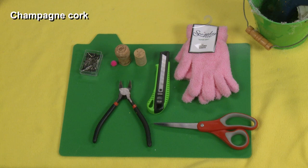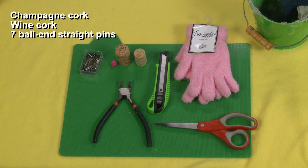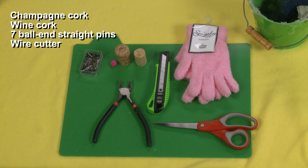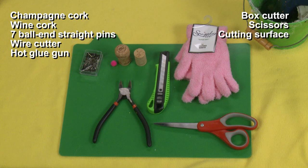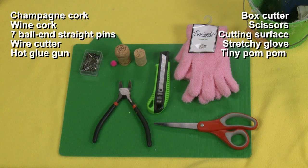For this project, you will need a champagne cork, a regular cork, seven ball and straight pins, wire cutter, a hot glue gun, a box cutter or exacto knife, scissors, a cutting surface, stretchy glove, and a tiny pom-pom.